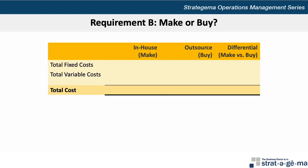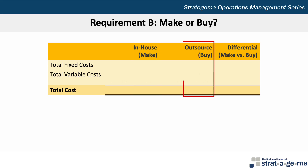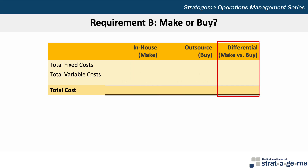Now for requirement B, we want to determine the total cost of making and buying at a volume of 7,800 units. One of the easiest ways to do this is to set up a table with a column for producing in-house or making, a column for outsourcing or buying, and a column for the difference between the two.